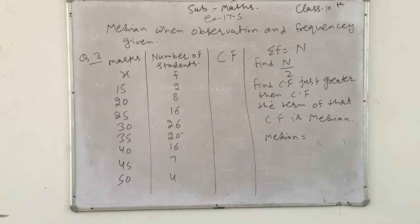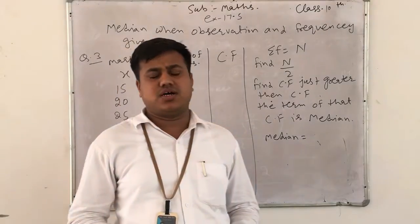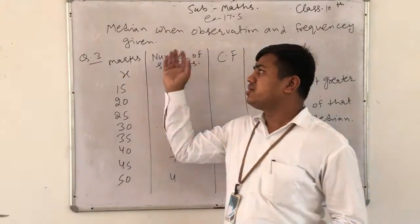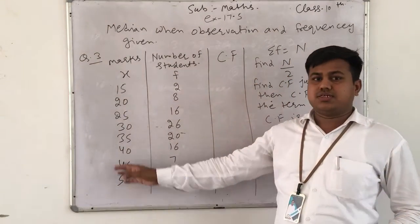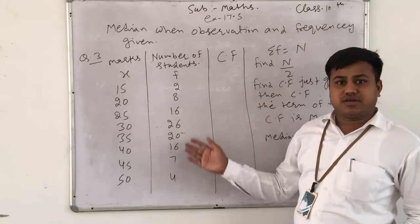So if class marks and frequency are given, then how will we find the median? Question number 3 of Exercise 17.5. Here the class marks, or observation, are given, and the number of students means frequency.